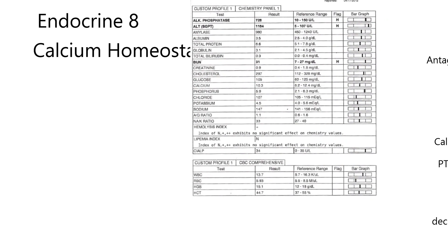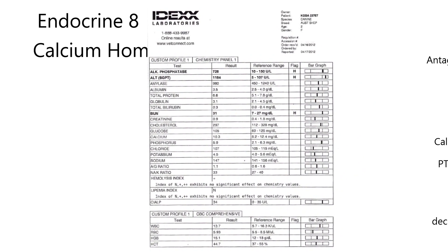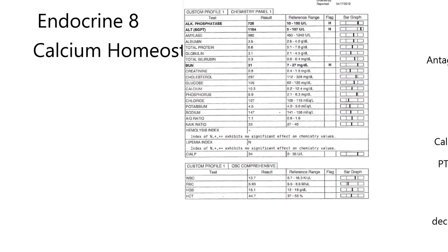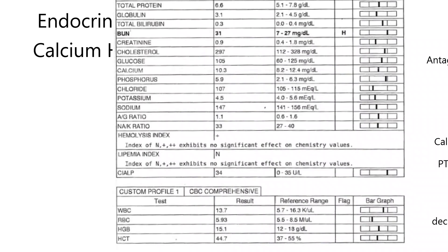Let's look at this blood panel from a dog. It's an Australian Shepherd canine, two years of age, and it's a female. I want to concentrate on blood levels of calcium. The number is 10.3, and the units are milligrams per deciliter. So here's the actual value from that dog — 10.3 milligrams of calcium per deciliter of blood.